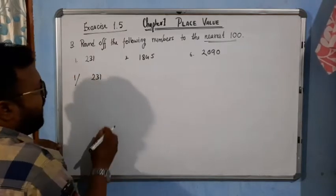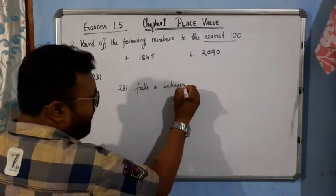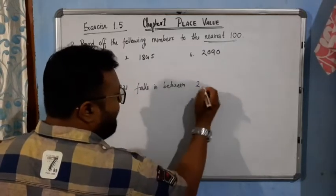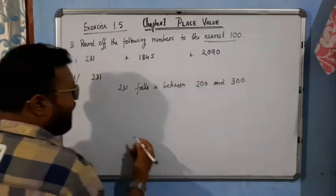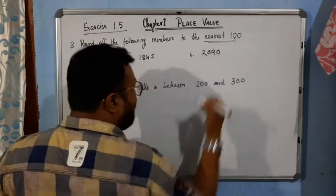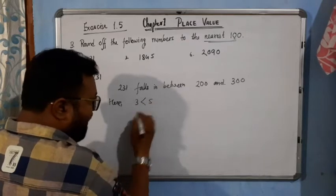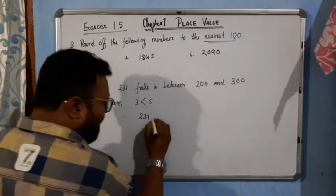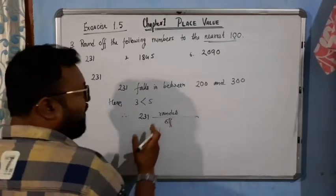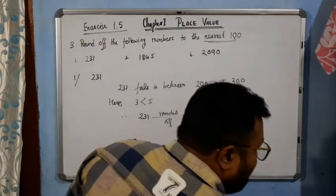For number one: 231, nearest hundred. So 231 falls in between 200 and 300. When we talk about nearest hundred, we will check the digit in the tens place. Here, 3 is in the tens place. 3 is less than 5. Therefore, 231 rounded off to the nearest hundred will be 200.